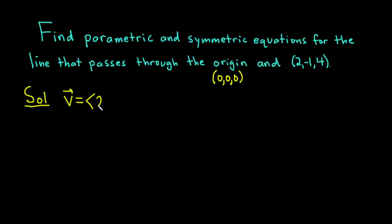So we can do 2 minus 0 which is just 2, negative 1 minus 0 which is just negative 1, and 4 minus 0 which is just 4. So v is the vector with components <2, -1, 4>. This is going to be our parallel vector.